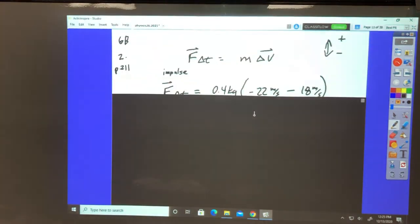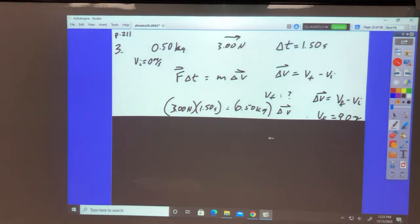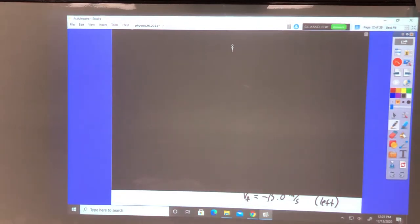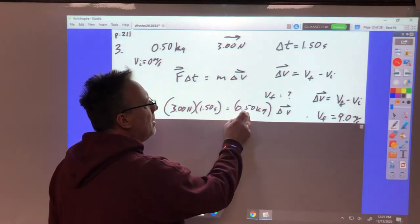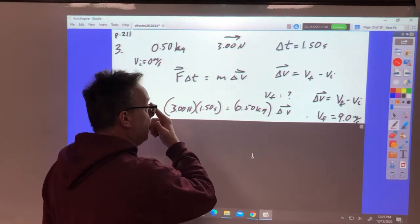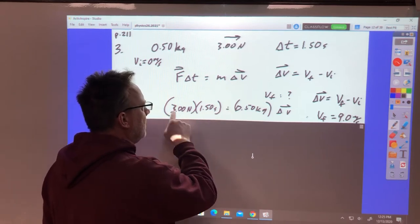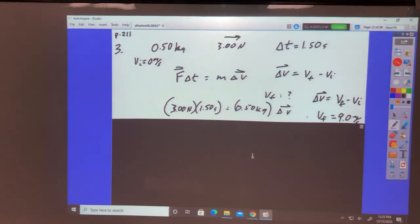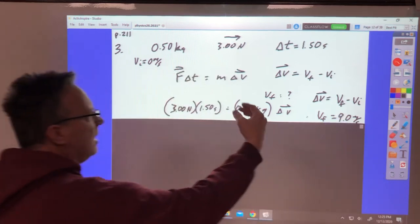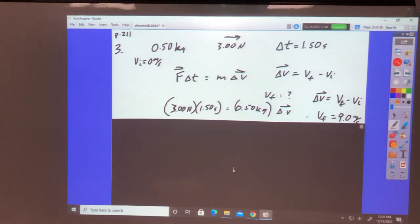Next: A half kilogram object is at rest, a 3 newton force to the right acts on it over an interval of 1.5 seconds. What is the velocity? If we use impulse equals momentum change, we have the force and the time and the mass. That's the easy way to solve for velocity. It ends up being 9 meters per second is the change in velocity. So if it starts at zero, then it ends up at 9 meters per second because it's at rest.